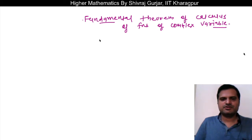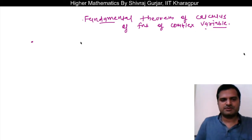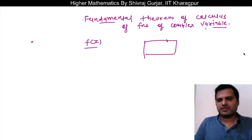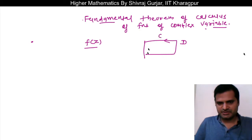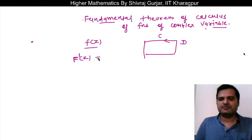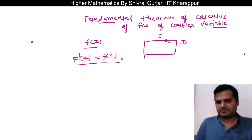Hello everyone, this is Sivaraj Gurujar and today we will discuss the Fundamental Theorem of Calculus of functions of a complex variable. So what the fundamental theorem says: let there be a function f(z) which is continuous in domain D, whose boundary is C. And suppose there is some other function capital F(z) whose derivative is equal to small f(z) for every z which is part of domain D.